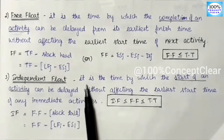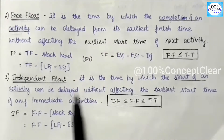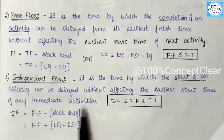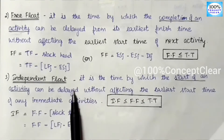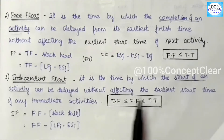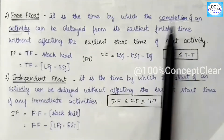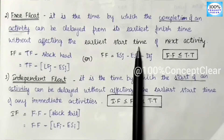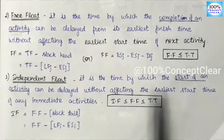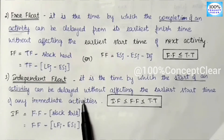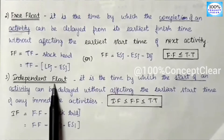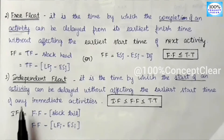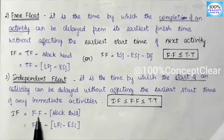The next float type is Independent Float. It is the time by which the start of an activity can be delayed without affecting the early start time of the immediate following activities. The formula for Independent Float is: Free Float minus Slack Tail.